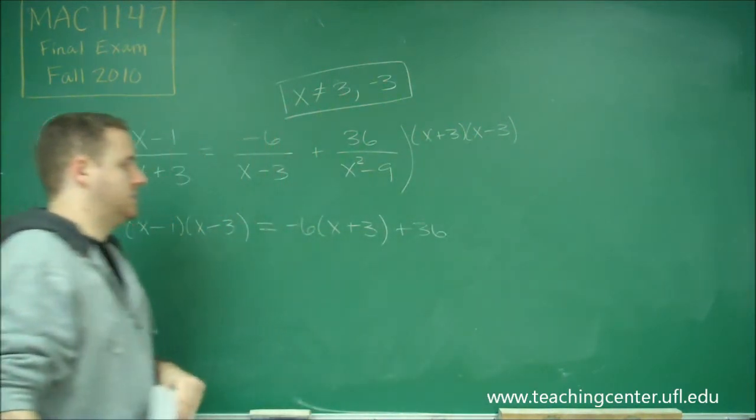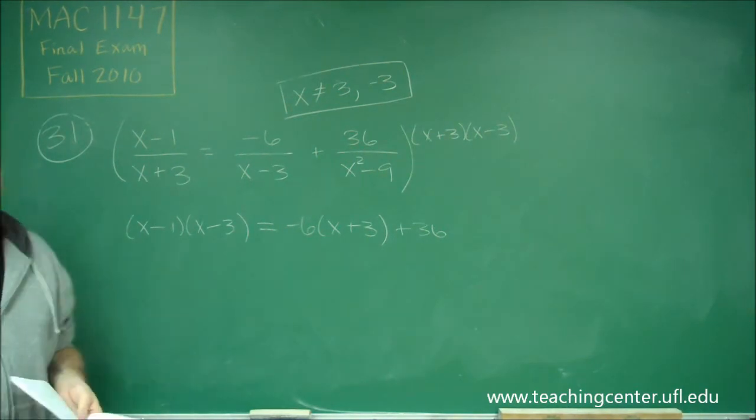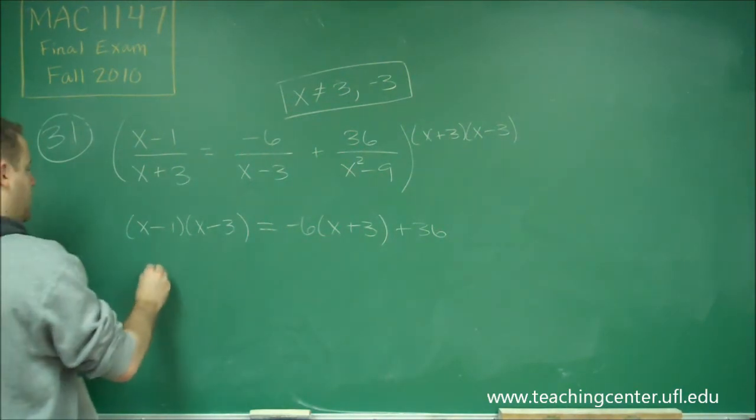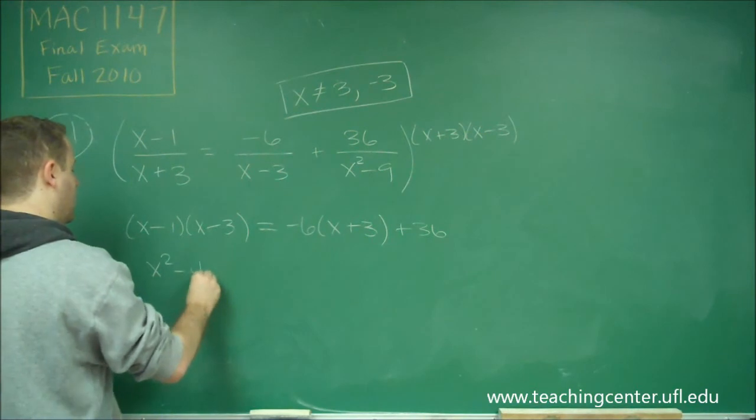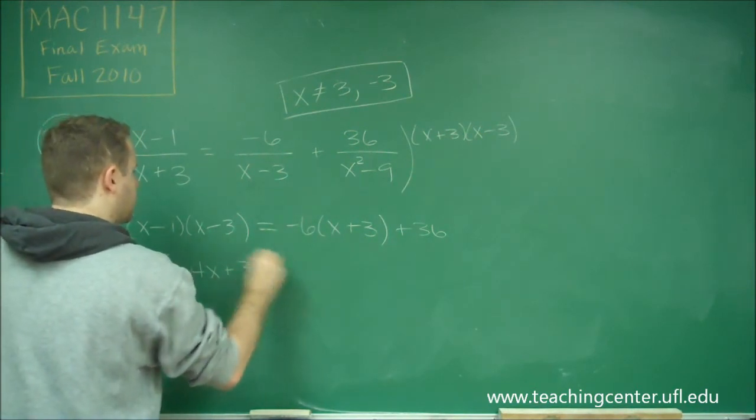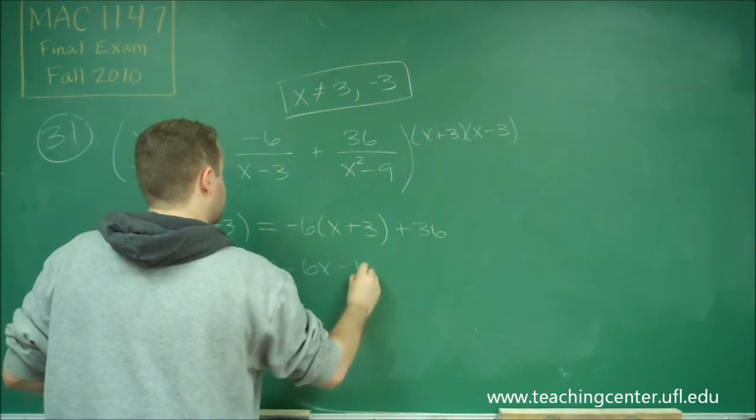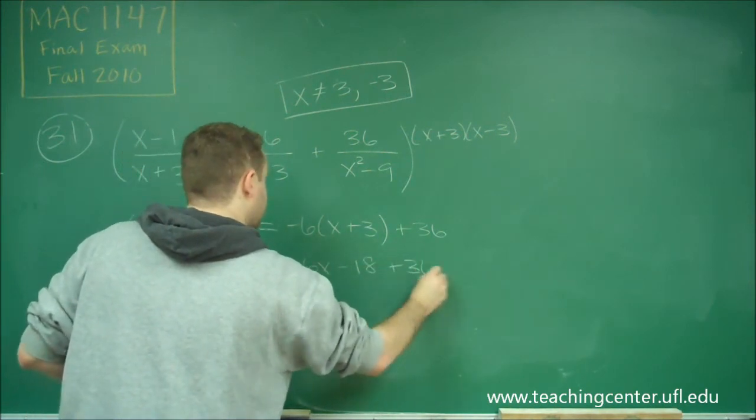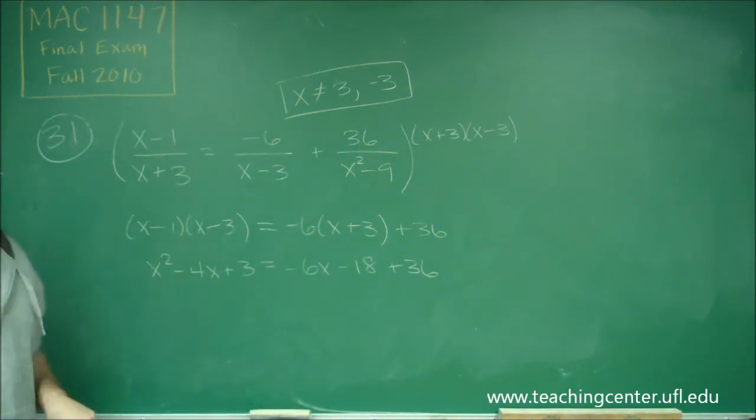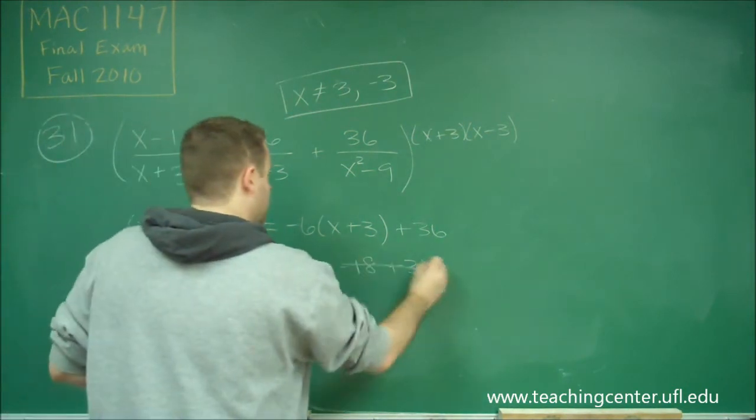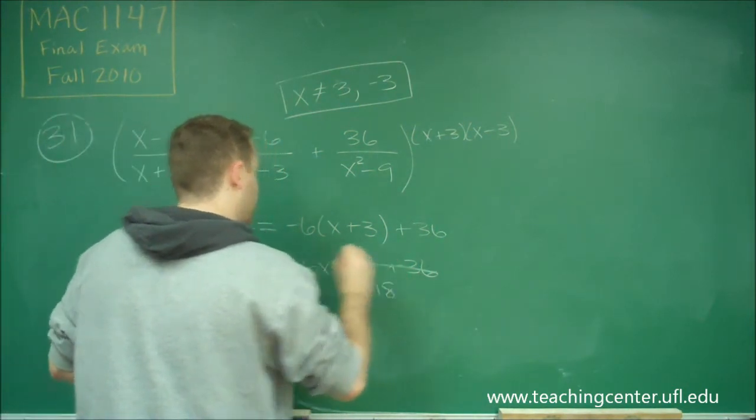And we just get plus 36. And now this is turning into a basic quadratic equation. So if we factor all this out here, we get x squared minus 4x plus 3 equals minus 6x minus 18 plus 36. Minus 18 plus 36 would just give us plus 18.